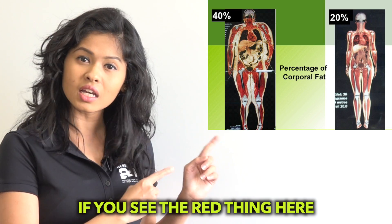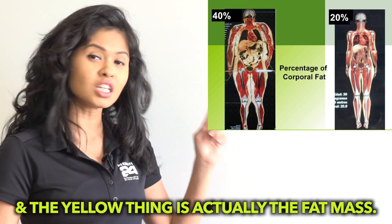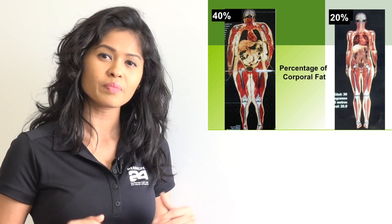To understand this better, let me show you scans of an overweight person and a lean body person. The red thing here is actually the muscle mass, and the yellow thing is actually the fat mass.